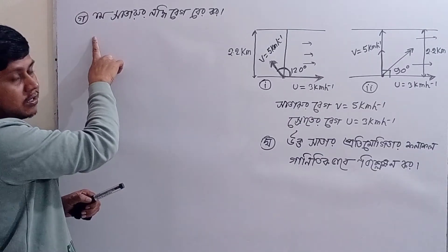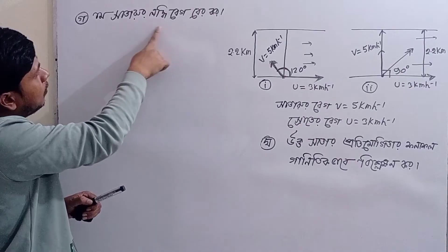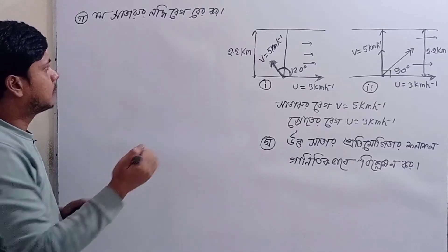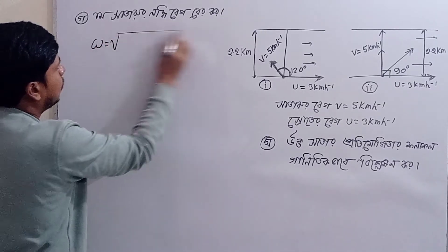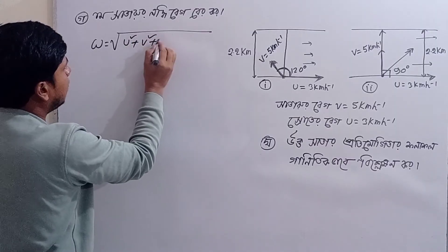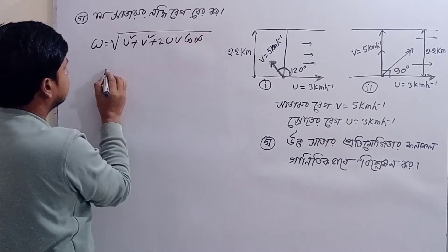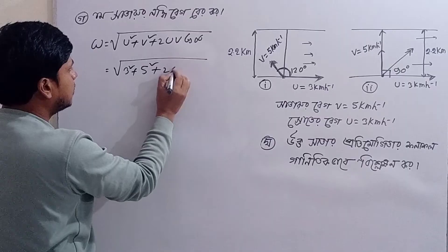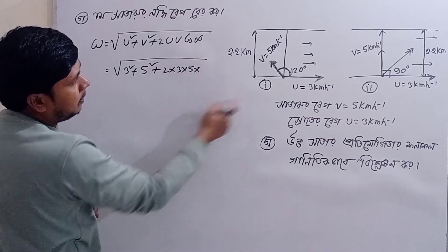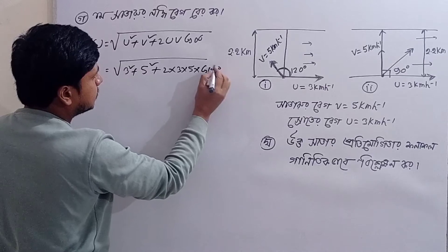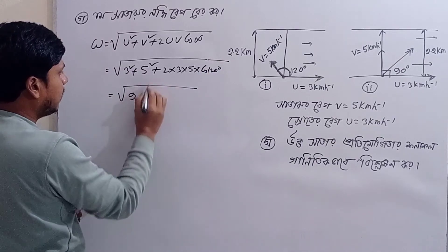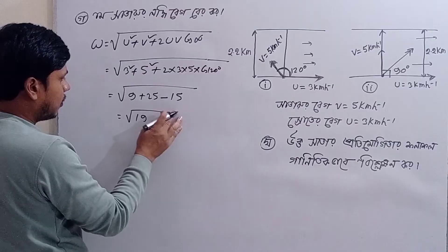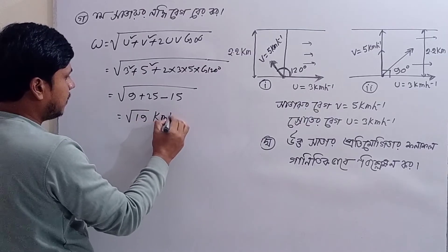The first zone is 1.3 km per hour. Here we can find it: the formula is w = root over u² + v² + 2uv cos α. So u is 3, v is 5: 5² + 2 × 3 × 5 and alpha. That gives us 9 + 25 minus 15. The calculation is root over 19 kilometer per hour.